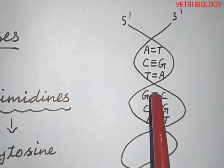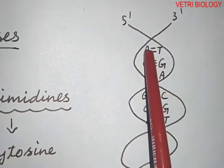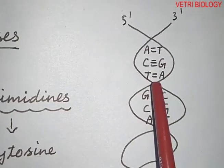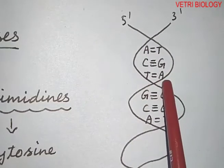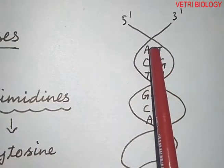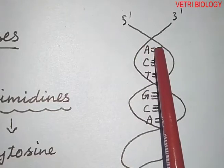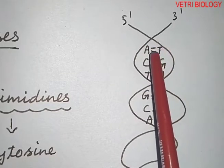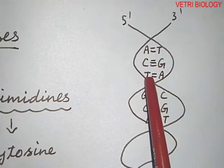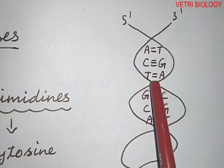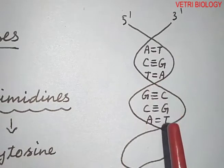In DNA, each unit shown here is one base pair. Each of these base pairs — this one, this one, and this one — represents the level at which a point mutation occurs. When any one of these individual base pairs changes, that is point mutation.